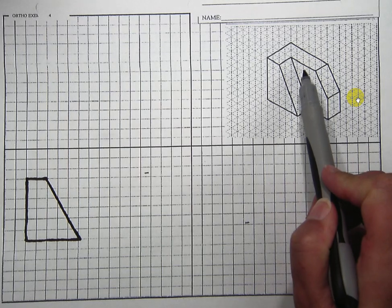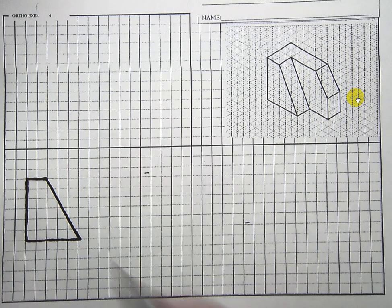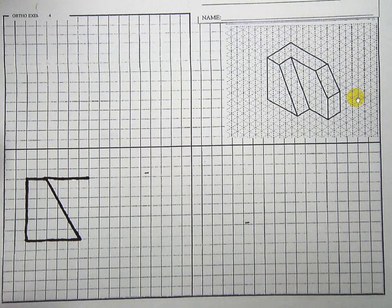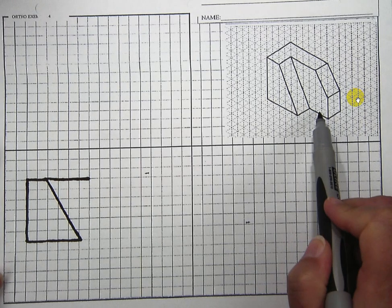So I'm going to count over 1, 2, 3, 4, 2, 4. On the bottom 1, 2, 3.